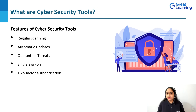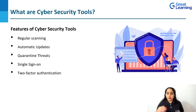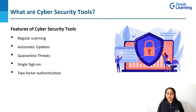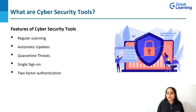Let's look at the features of cybersecurity tools. Regular scanning: cybersecurity tools regularly scan the computer system for threats to protect confidential information. Automatic updates: cybersecurity tools are updated automatically on a regular basis. Quarantine threats: when cybersecurity tools encounter threats in a computer, they isolate the threats so that they do not spread to the rest of the computer. Single sign-on, or SSO, is an authentication method that authenticates the user with one set of credentials for multiple applications. Two-factor authentication authenticates the user in two steps.